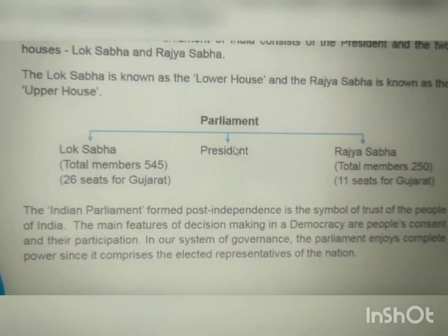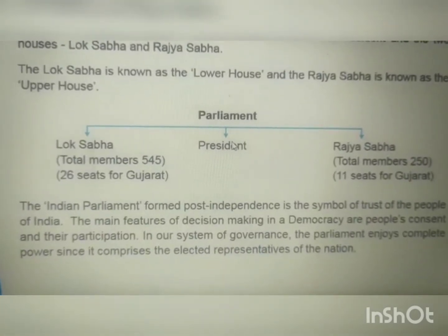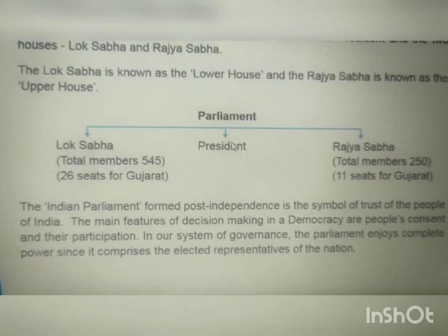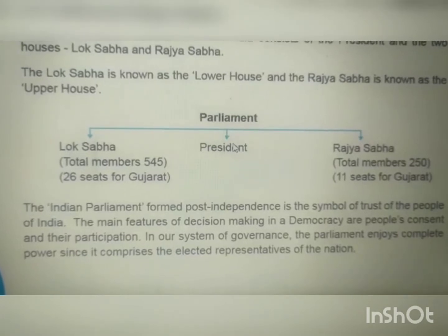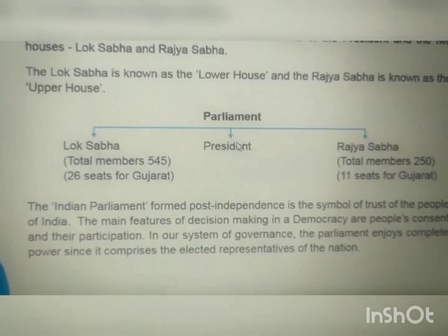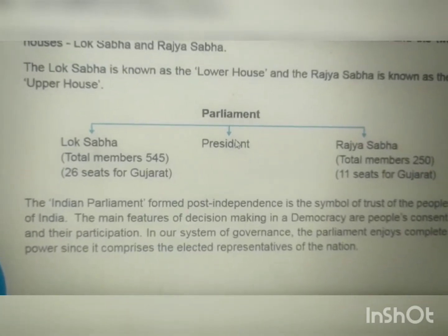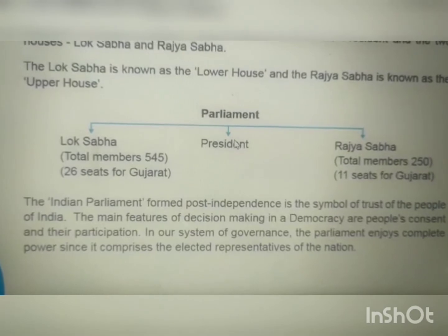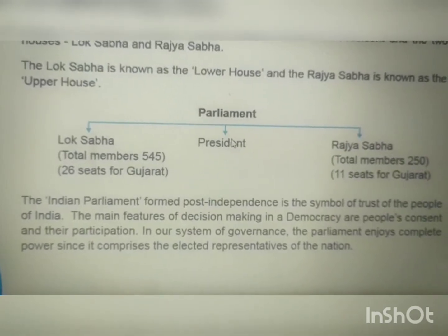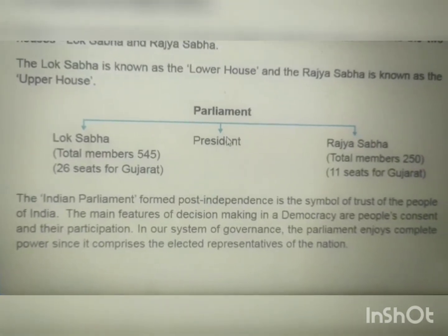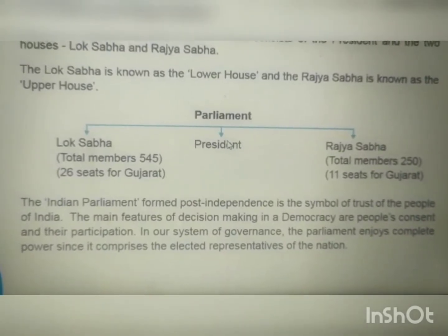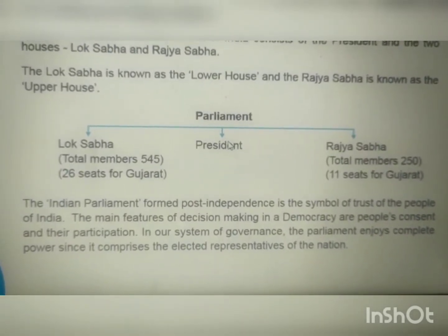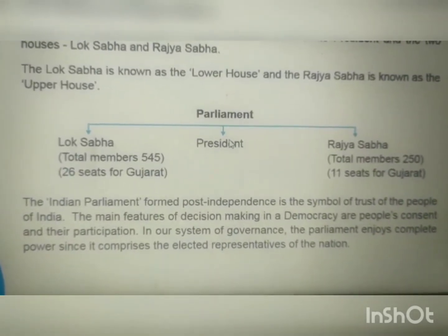According to the table, parliament consists of the President and the two houses — Lok Sabha and Rajya Sabha. In Lok Sabha there are a total of 545 members, out of which 26 seats are for Gujarat. In Rajya Sabha, total members are 250, and there are 11 seats for Gujarat.